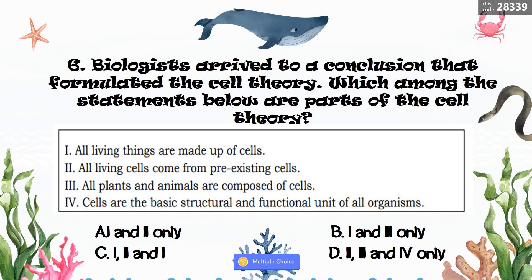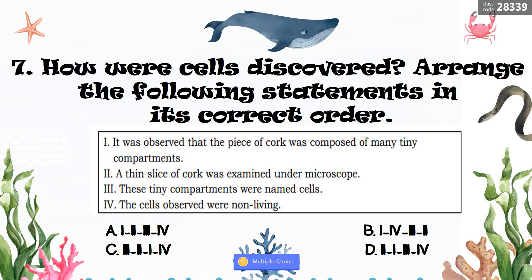Number seven: How were cells discovered? Arrange the following statements in correct order. 1. It was observed that a piece of cork was composed of many tiny compartments. 2. A thin slice of cork was examined under microscope. 3. These tiny compartments were named cells. 4. The cells observed were non-living. The correct answer is letter D: 2, 1, 3, 4.